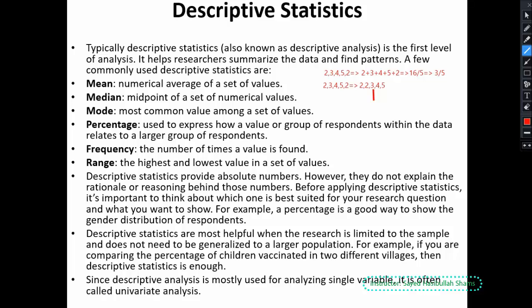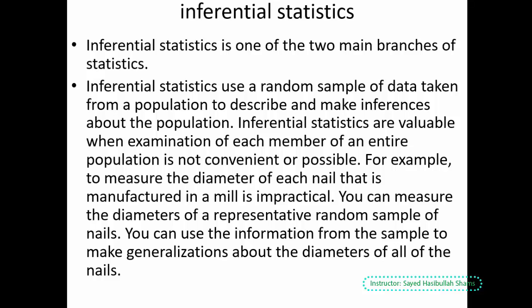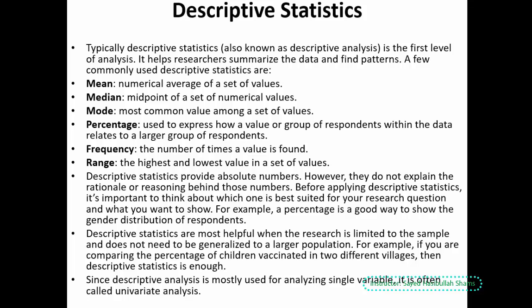We also have inferential statistics, such as t-tests and correlation, which we use for different purposes — for example, checking the relationship between variables. We can use SPSS or calculate manually. So these were all the quantitative analysis methods and tricks that we must consider during quantitative analysis. We will have a practical quantitative analysis session in the next lecture. Thank you.